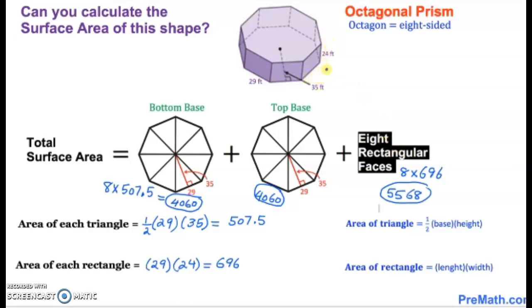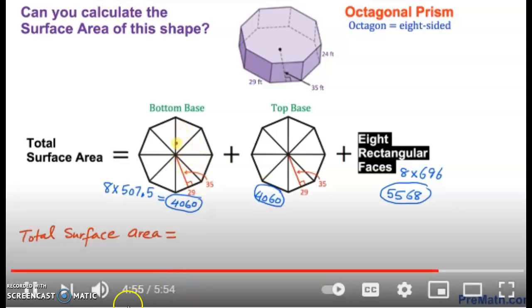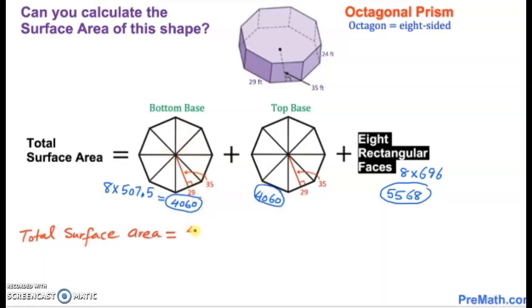We've got our area of our top base and the area of our bottom base. So we can now look to find the total surface area. All I'm going to do is add up those three values: 4,060 plus 4,060 plus 5,568. If we go ahead and plug that into our calculator, we get that our total surface area of this octagonal prism is going to be 13,688.